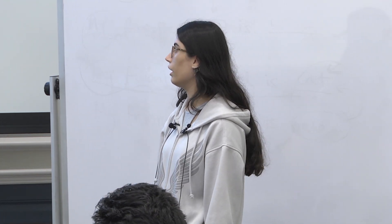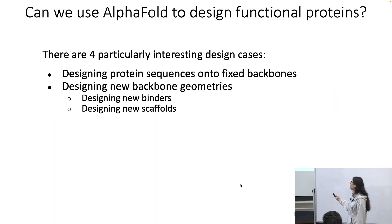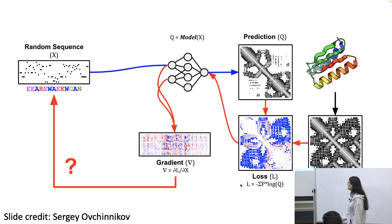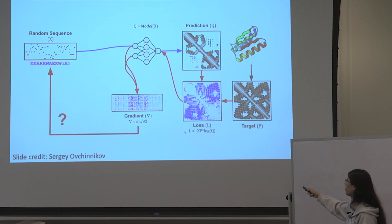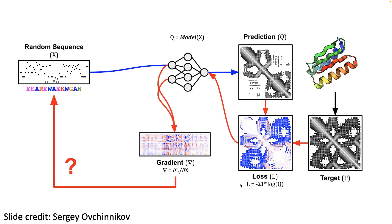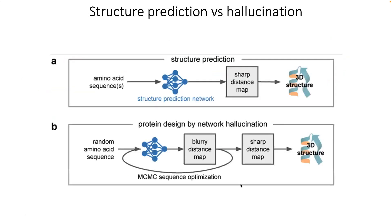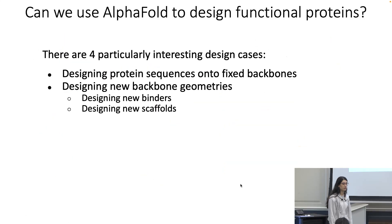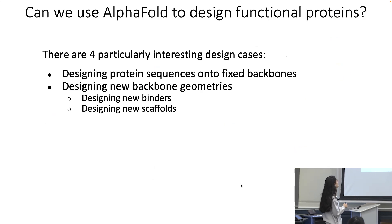This process is called AlphaFold-based hallucination, also called AF design, and that is today's demonstration focus. We'll look at the colab design set of notebooks and demonstrate with AF design. The question is: can we use AlphaFold to design functional proteins? We place AlphaFold in the loop to generate new sequences and converge to a well-folded structure with a sharp contact map — de novo design at the level of both structure and sequence.